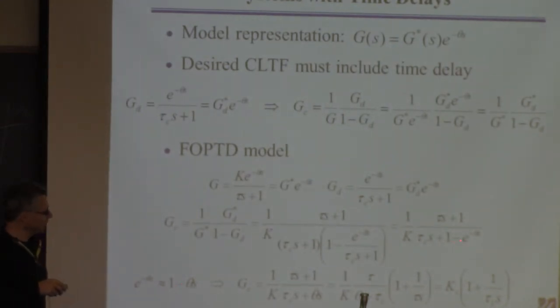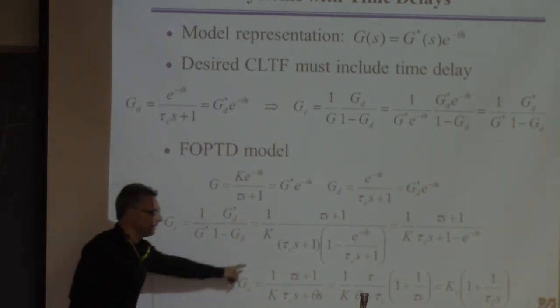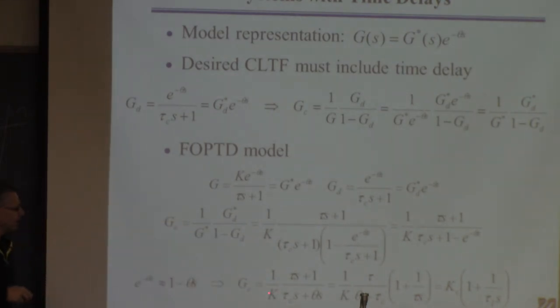I'm just going to eliminate the time delay using this approximation. That's obviously very convenient because the ones will cancel and I'll get plus theta*s here. Now I look at this thing and conclude I can rearrange this to be a PI controller. Why? Because there's the term I need in the numerator, and this term down here is just some constant times s. That's a PI controller.